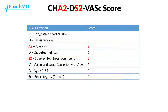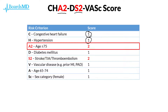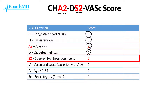In determining the CHADS-2 VASc score, a patient receives one point for most criteria. However, there are two criteria — age greater than or equal to 75, and prior stroke, TIA, or thromboembolism — for which the patient receives two points. To go through all of the criteria: congestive heart failure gives one point, hypertension gives one point, age ≥75 gives two points, diabetes gives one point, and stroke, TIA, or thromboembolism gives two points. This is not surprising because the score is essentially measuring risk of developing a stroke, so having had one of these events in the past indicates additional future risk.